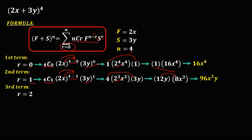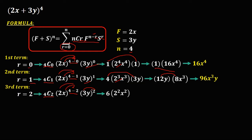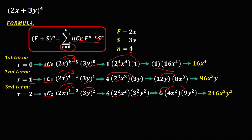For the third term, r now equals 2. We have 4 choose 2, times 2x to the power of 4 minus 2, times 3y to the power of 2. Using a calculator, 4 choose 2 is 6, and 4 minus 2 is 2. Distributing gives 2 squared and x squared, and 3 squared and y squared. Simplifying: 6 times 2² is 6 times 4, which is 24, and 3² is 9. Then 24 times 9 is 216, so the third term is 216x²y².